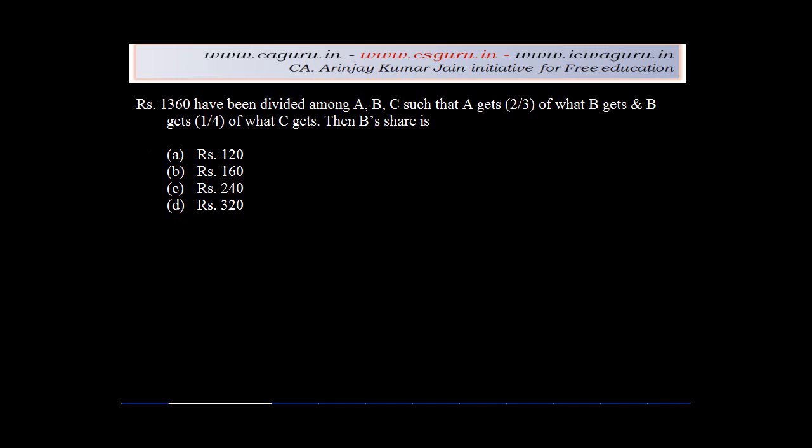Now basically in this question if you see, predominantly you have three people A, B and C. And the total money that has to be distributed amongst them is 1,360.